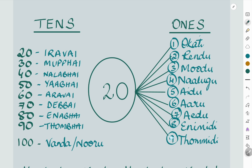Then we go to 30. 30 is 'mupbhai', so: 'mupbhai okati', 'mupbhai rendu', 'mupbhai moodu', 'mupbhai nalagu', 'mupbhai aidu', 'mupbhai aru', 'mupbhai eidu', 'mupbhai enimidhi', 'mupbhai tommidhi' — that takes us from 31 to 39.